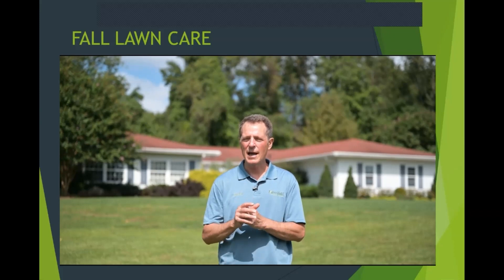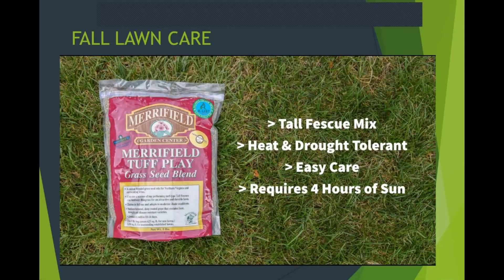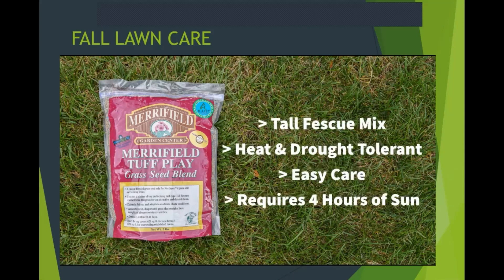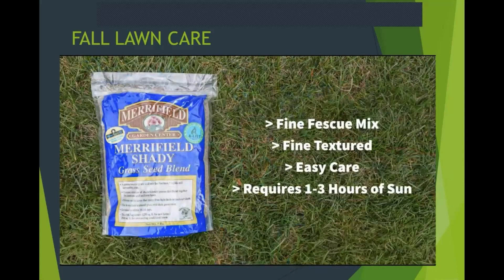We custom blend both grass seed and fertilizer for our region. Our grass seed contains only the top-performing varieties for the Virginia, Maryland, and DC area, custom blended by a producer in Oregon. Most of us will use Merrifield Tough Play, a mix of tall fescue and Kentucky bluegrass. Tall fescue is the most heat- and drought-tolerant cool season grass, and the bluegrass adds density and wear tolerance. It needs at least four hours of sunlight. For shadier conditions with only two or three hours of sun, the Merrifield Shady Mix — predominantly fine fescue with a little bluegrass — performs better competing for sun, water, and nutrients under a tree canopy.